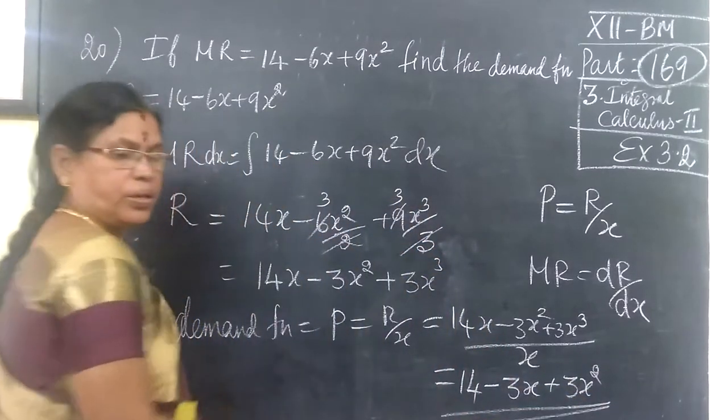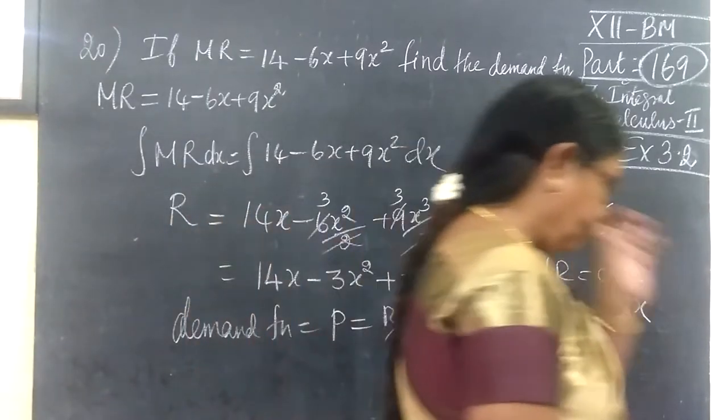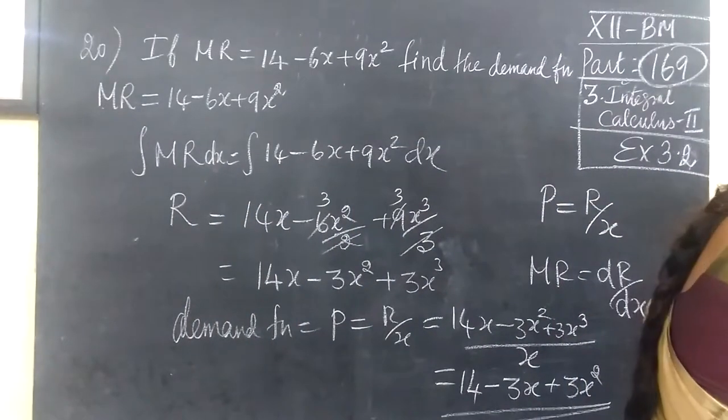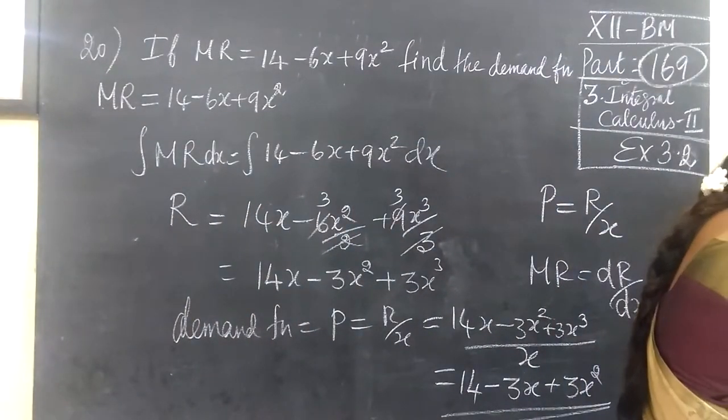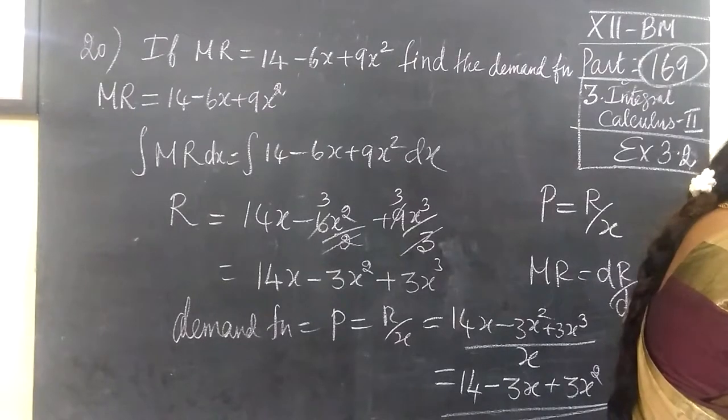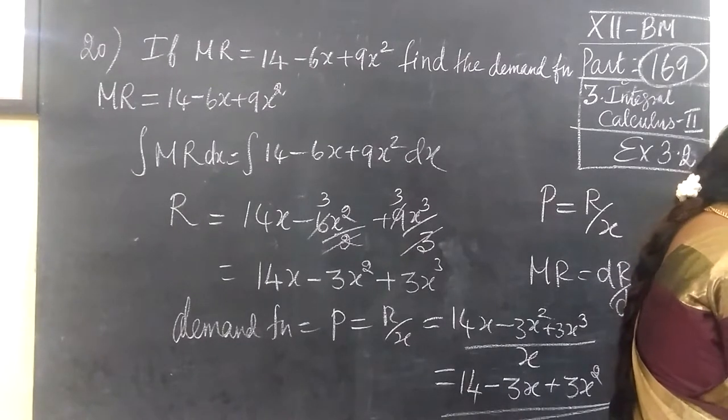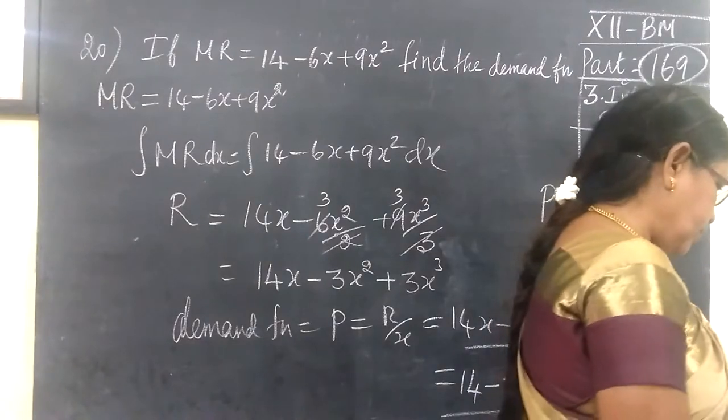We cancel to get 14 minus 3x plus 3x squared. So the answer for this is 14 minus 3x plus 3x squared. This one is correct.